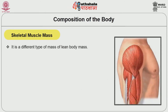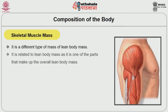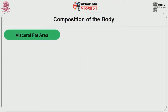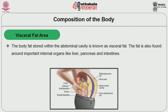Skeletal Muscle Mass is a distinct type of mass within lean body mass. It is related to lean body mass as it is one of the parts that make up the overall lean body mass. It is influenced by factors outside the muscle, particularly water. Water is dependent on lean body mass.